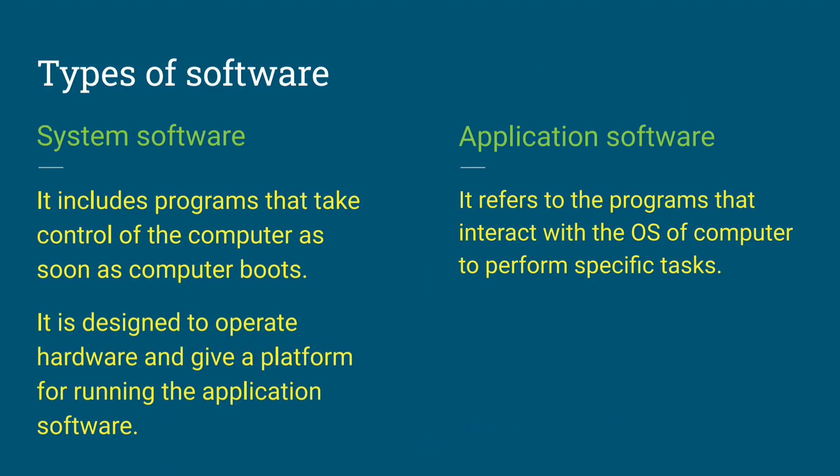Software is developed by software programmers. And there are two types of software: system software and application software.